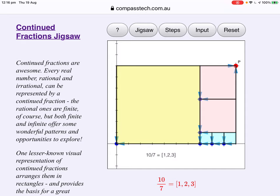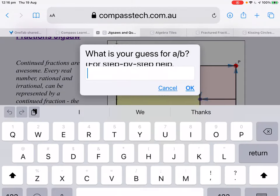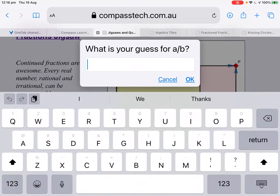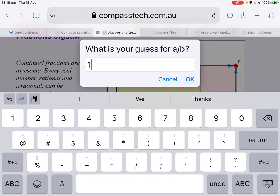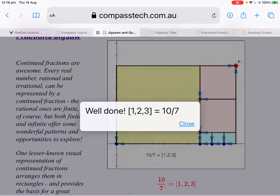So, we tap the jigsaw button, and put in our result. 10 over 7. Well done.